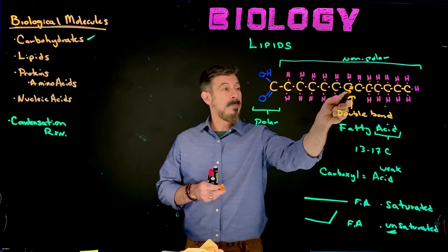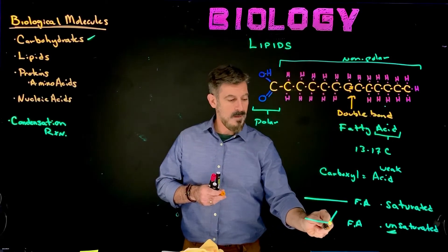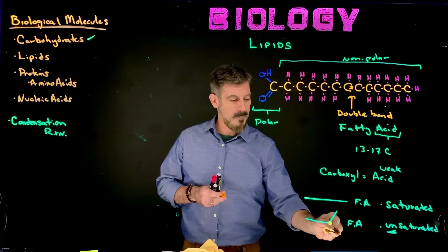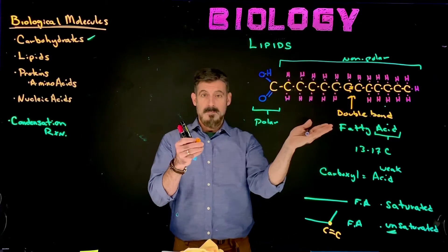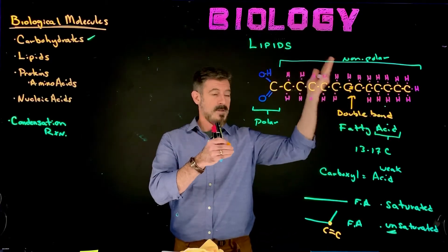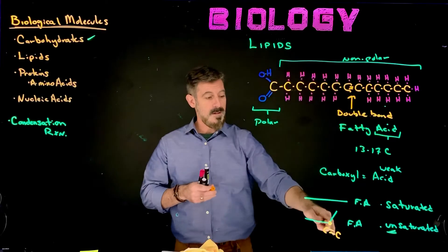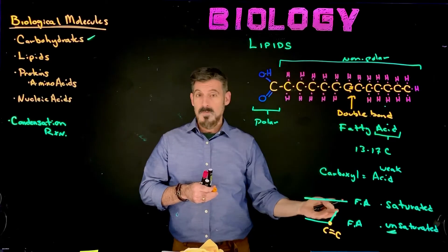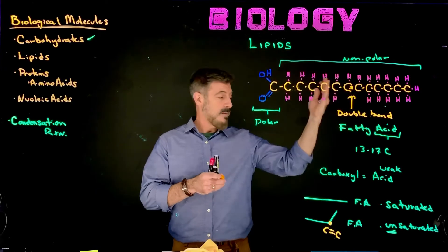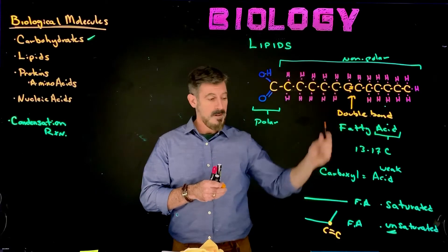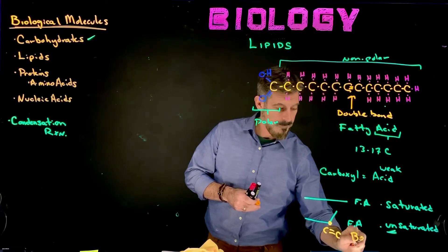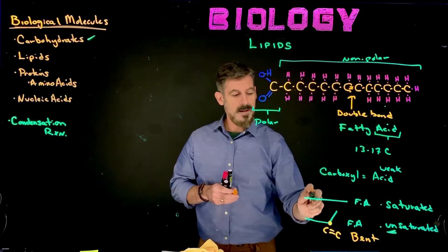And wherever it happens to be that those two carbons are double bonded, that part of the structure is going to bend at that double bond and change shape. So the unsaturated fatty acids have this kinked or bent shape to them, whereas the saturated fatty acids are straight.